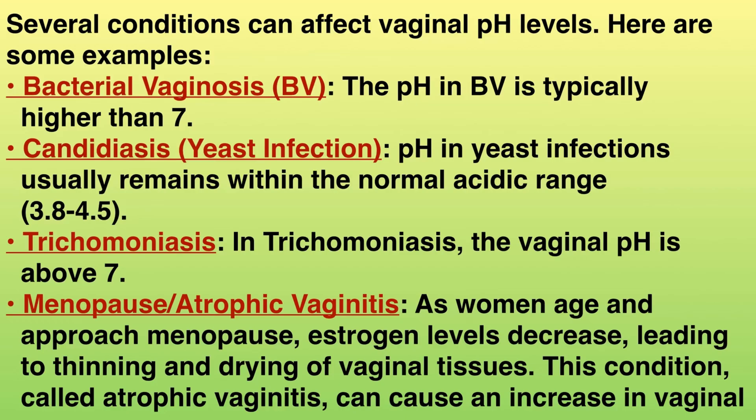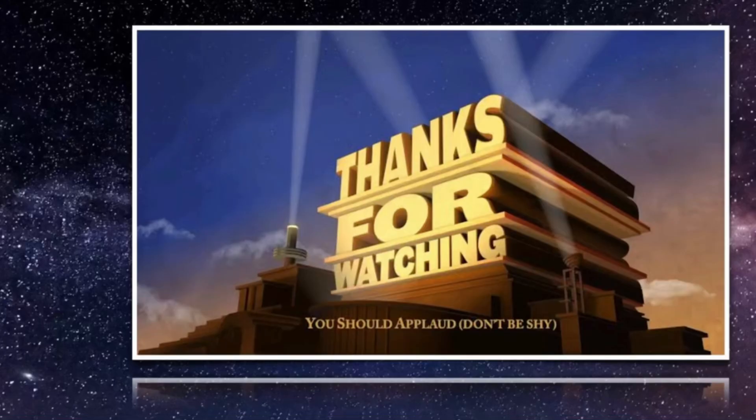Menopause or atrophic vaginitis — as a woman ages and approaches menopause, estrogen levels decrease, leading to thinning and drying of vaginal tissues. This condition is called atrophic vaginitis and causes an increase in vaginal pH. And that's all for today. Thanks for watching and see you in the next episode, which is going to be Episode W.